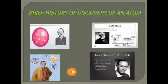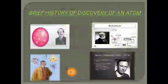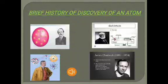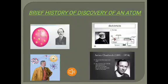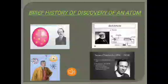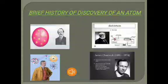Now we are going to discuss the brief history of the discovery of the atom. In 1897, Sir J.J. Thomson discovered electrons. He studied the structure of the atom and concluded that atoms are divisible and contained negatively charged particles which were called electrons.